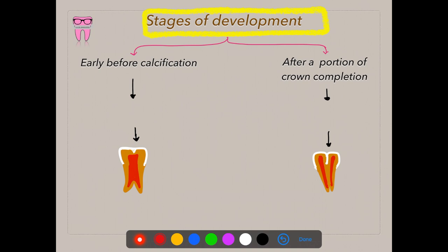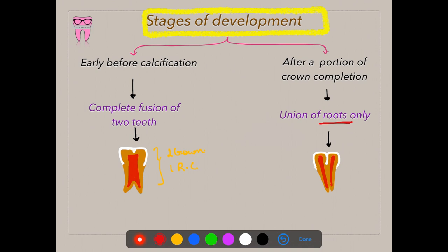There are two forms of fusion depending on different stages of development. If fusion occurs early before calcification, you would see a complete fusion of two teeth with two crowns and one root canal — a bulky pulp chamber or root canal. If fusion occurs after a portion of the crown has been completed, you would see union of only the roots, with pulp chambers separated from each other.